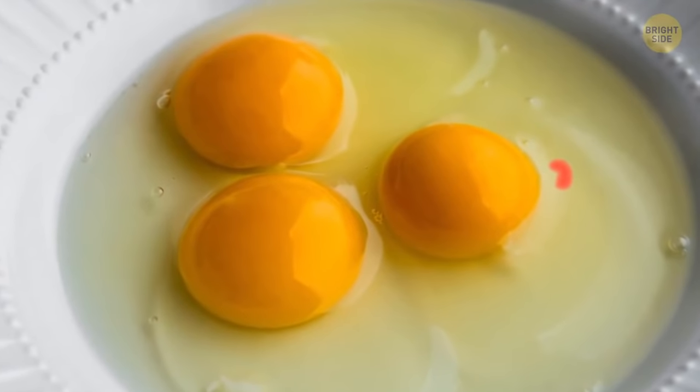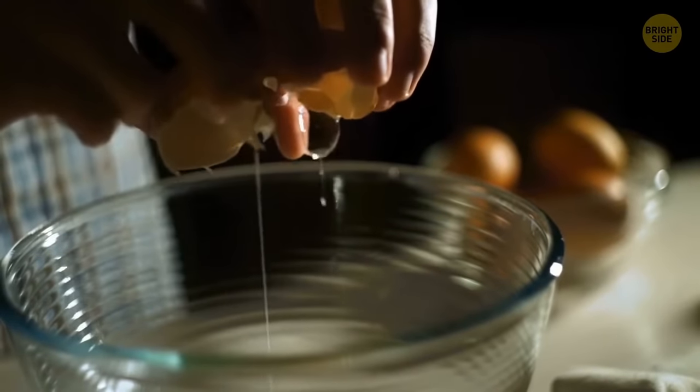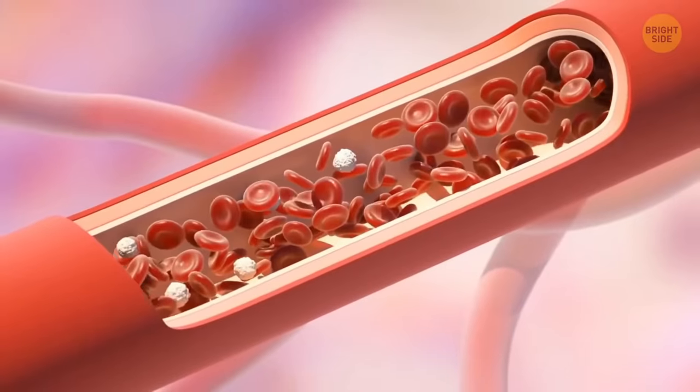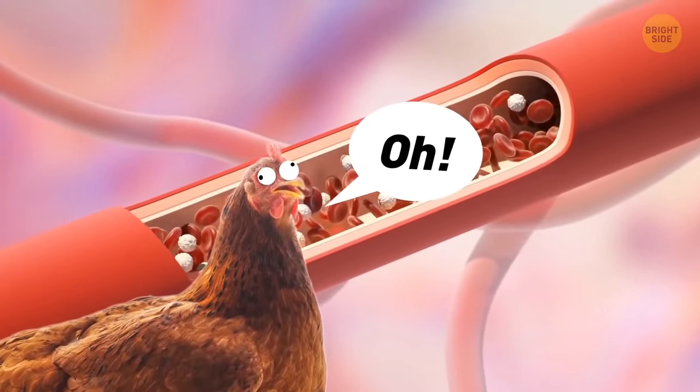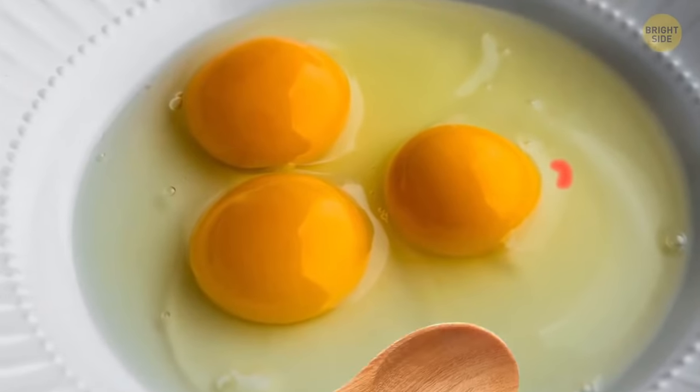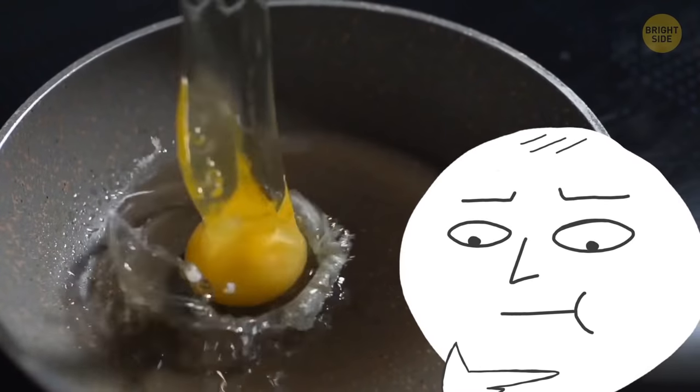Those little red spots you sometimes see after you crack an egg are nothing to be worried about. Tiny blood spots can be caused by a small rupture in the blood vessel of the hen as it was laying the egg. Eggs with these blood spots are safe to eat, but that spot can be removed if you want. It won't affect the taste of the egg. That's comforting.